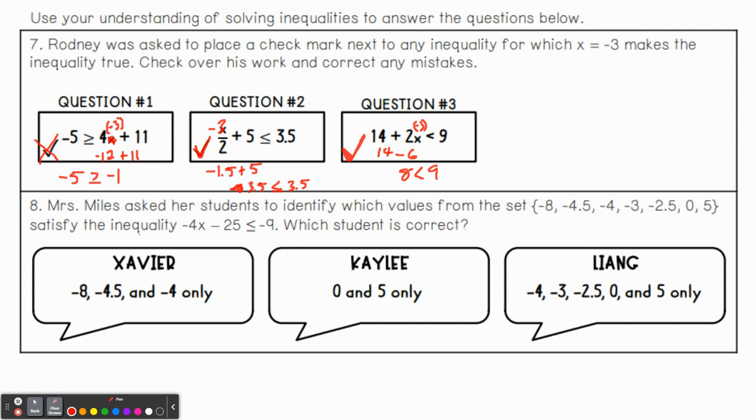All right, Mrs. Miles asked her students to identify which values from the set, negative 8, negative 4.5, I'm not going to read all these, but do you see what I mean? Let's go ahead and solve this inequality first. I think that would make this a lot easier. That way we know pretty quickly whether Xavier, Kaylee, or Liang got that right. So if we solve this, negative 4x minus 25 is less than or equal to negative 9. Remember, our first step, we want to isolate the variable. So let's add 25 to get rid of it, right? Cross that out. Add 25 over here. So we're left with negative 4x is less than or equal to 16.